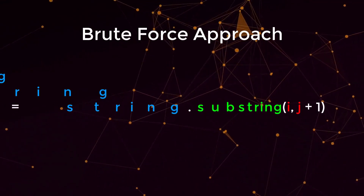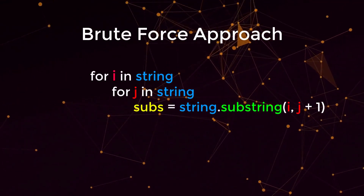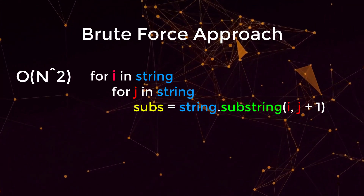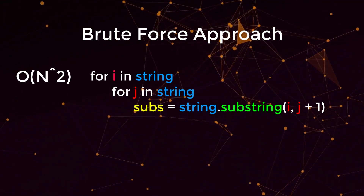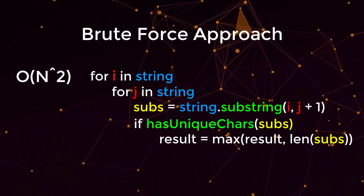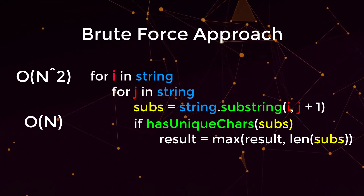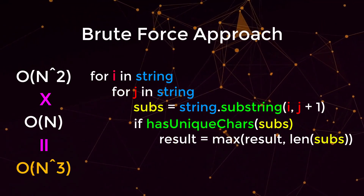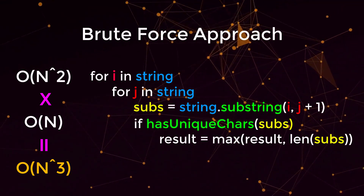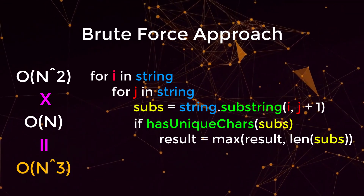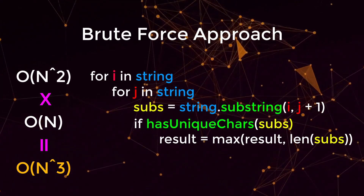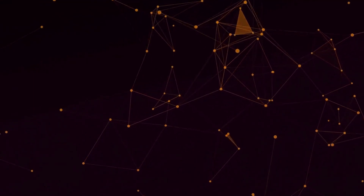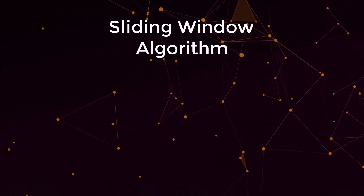Let's talk about the brute force approach. What we could do is have a nested for loop to compute all of the substrings in this string — that would be an O(n²) operation. Then for every single substring we would need to determine if it has unique characters, which is an O(n) operation. So O(n²) times O(n) gives us O(n³). Obviously this is not the best way to solve this problem, but it is good to start with so you can work your way up to the more optimized approach.